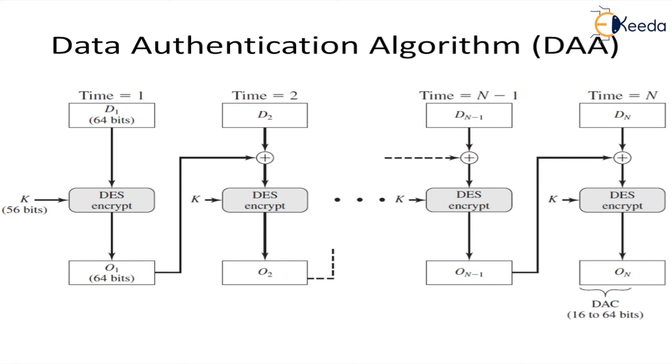For every DES encryption we need to have the 64-bit key and the entire entry of one particular data that is of 64 bits. Output of the DES encryption algorithm is output On which is of 64 bits, which is given as feedback to the input of the second stage. Here the data D2 is taken and the output of the first stage is added. The DES encryption is processed with the help of key K and output is produced. The similar cycle is being continued up to n minus 1. Here the n minus 1 output On minus 1 is provided with the next n value producing the DAC, which can be a length of 16 to 64 bits.